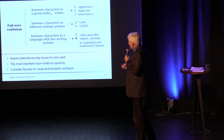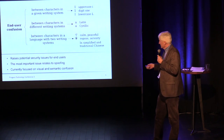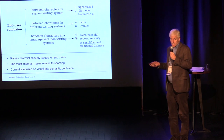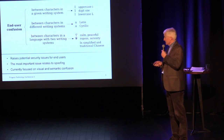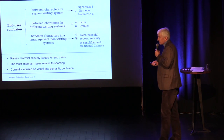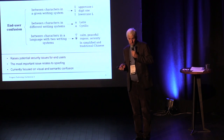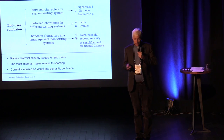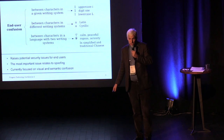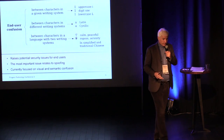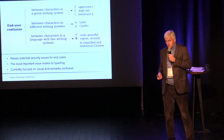The second type of confusion is between two different writing systems. For example, if you have an address written in the Latin writing system or the Cyrillic writing system, several letters look exactly alike. The lowercase letter A in Latin and Cyrillic are practically impossible to distinguish to the human eye.